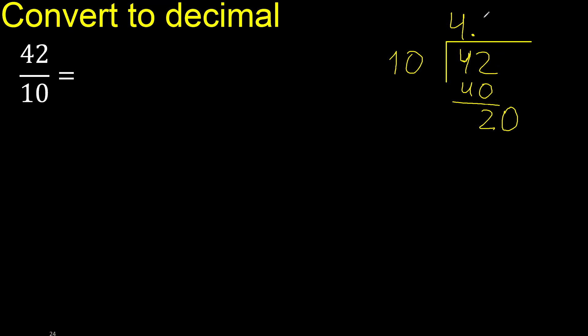Multiplied by 2 is exactly 20. Subtract 0. Therefore finish.